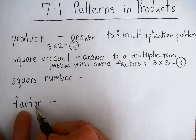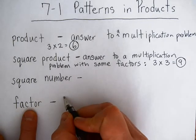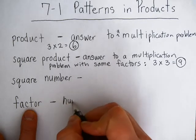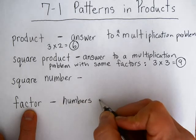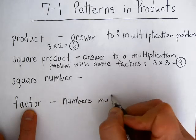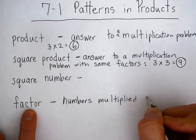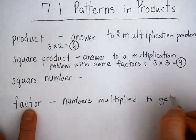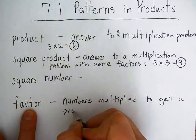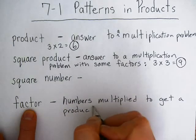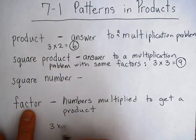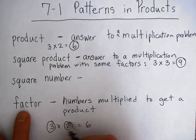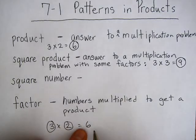A factor is the number or numbers that you multiply to get a product — it's for multiplication. So for example, if we have 3 times 2 equals 6, then 3 and 2 are going to be the factors of 6.